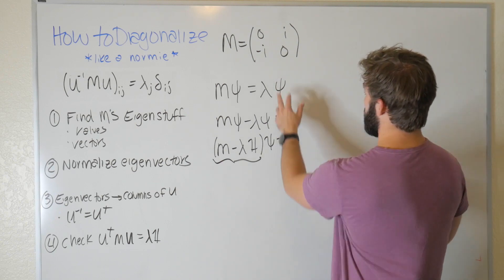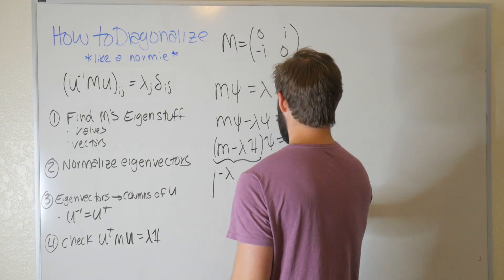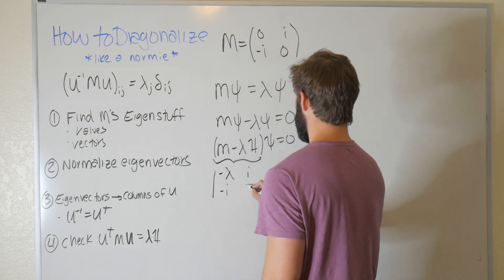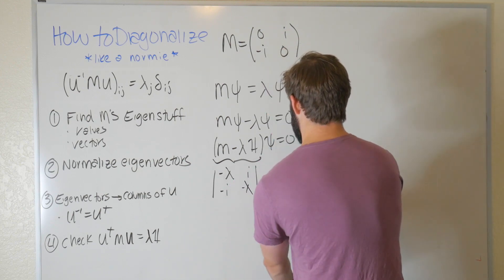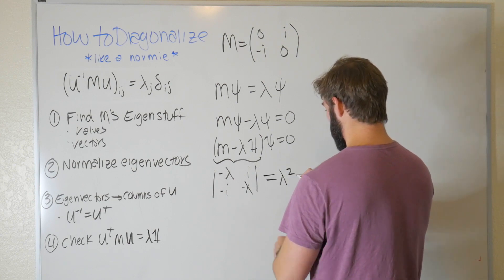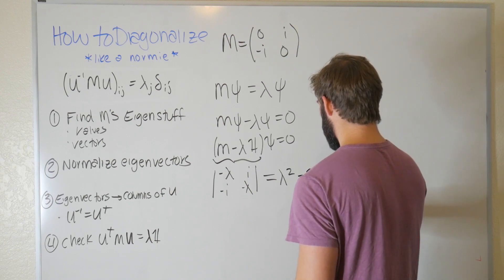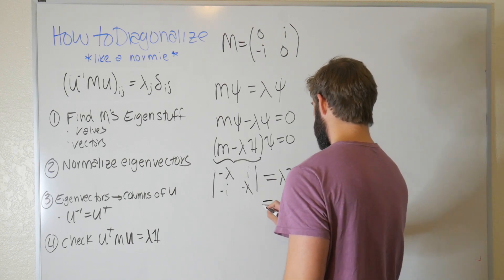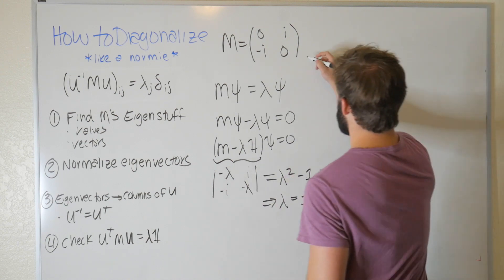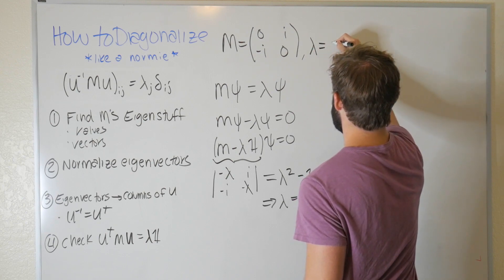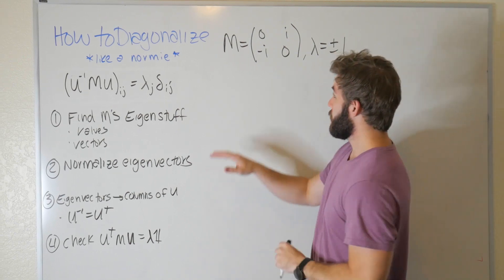Setting up the determinant for our 2×2 matrix, we get det([[−λ, i],[−i, −λ]]) = λ² − (−i)² = λ² − (−1) = λ² + 1... wait, that gives us λ² − (i)(−i) = λ² − 1 = 0, which tells us λ = ±1. So we have two eigenvalues: λ = +1 and λ = −1.